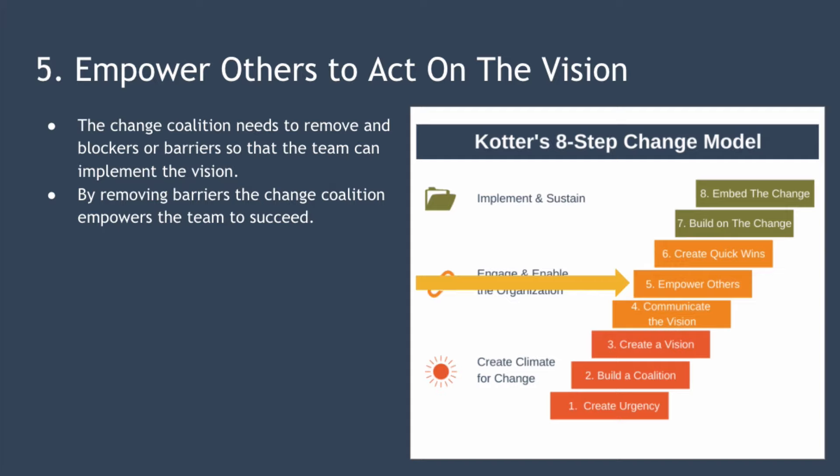It could also mean setting up a reward system aligned to the desired outcome to motivate the team, identifying those who are resistant to change and working with them to get their buy-in, or even hiring or borrowing the people you need where you can see gaps. By removing barriers and overcoming obstacles, the entire change coalition empowers the team to succeed.